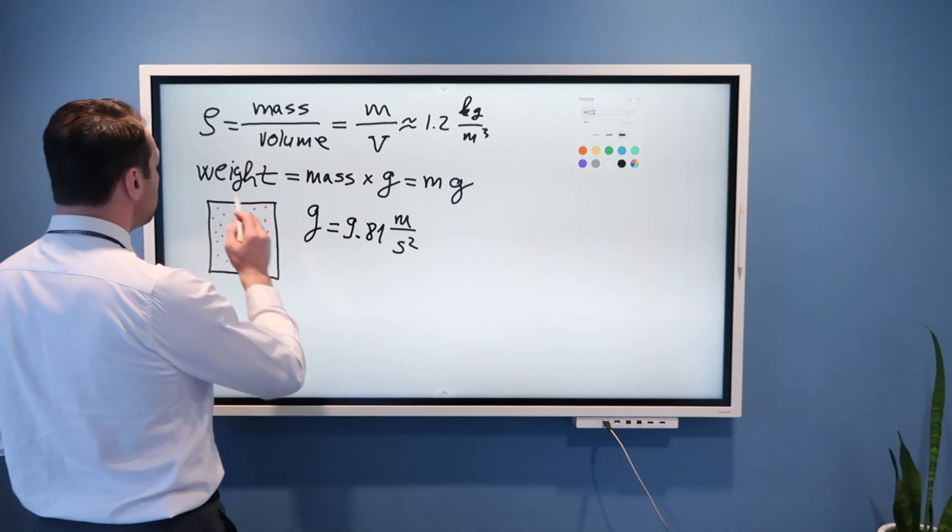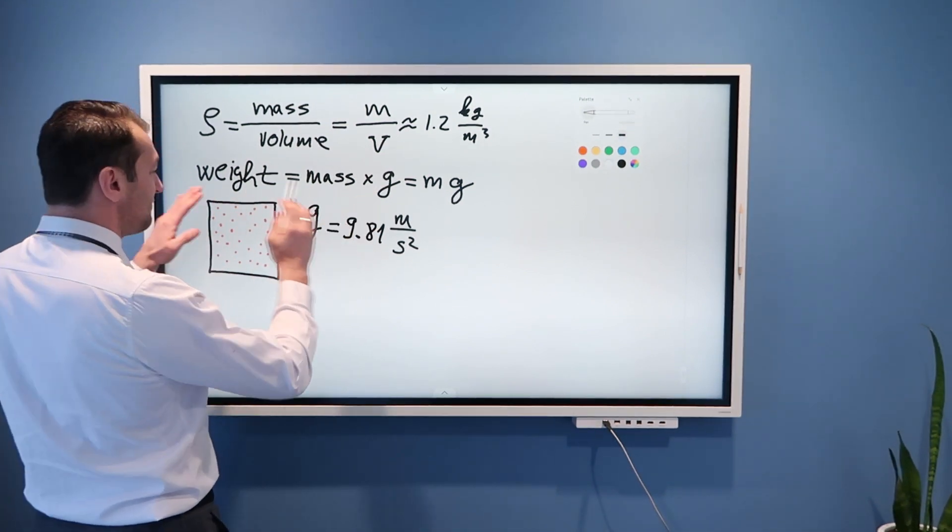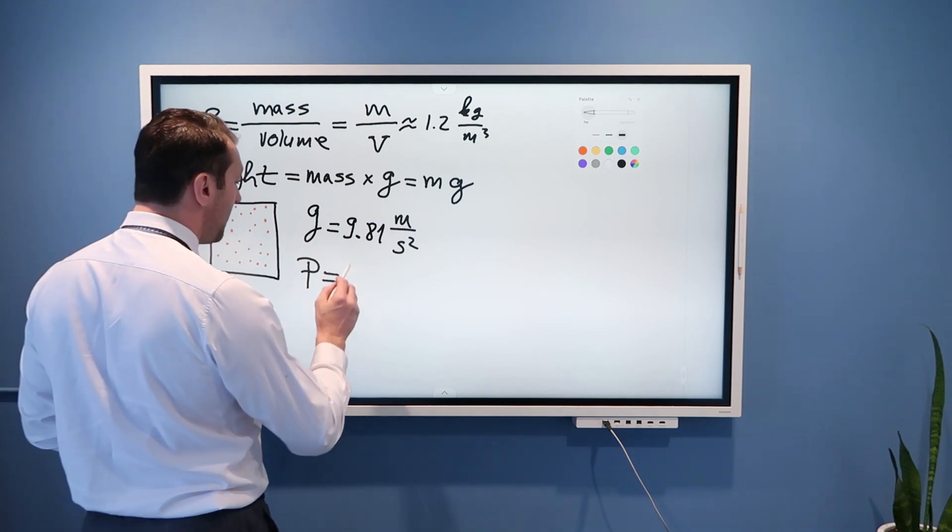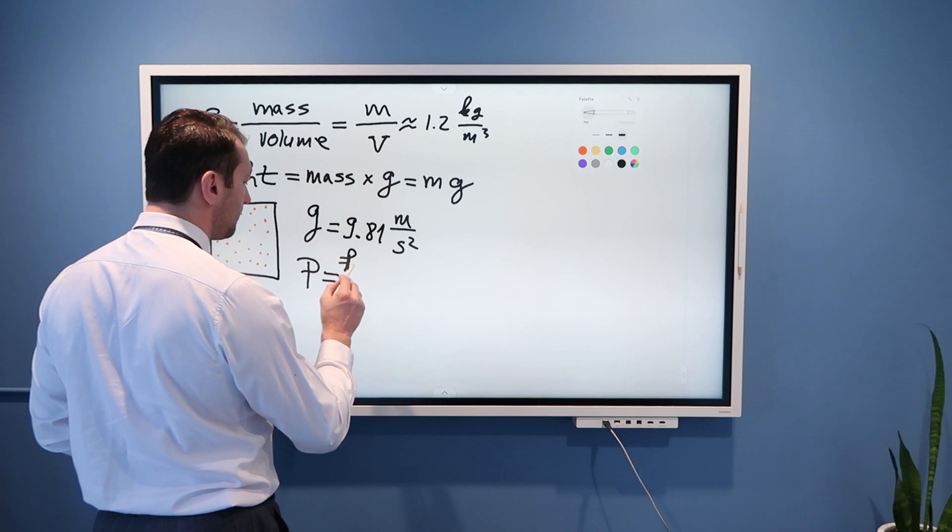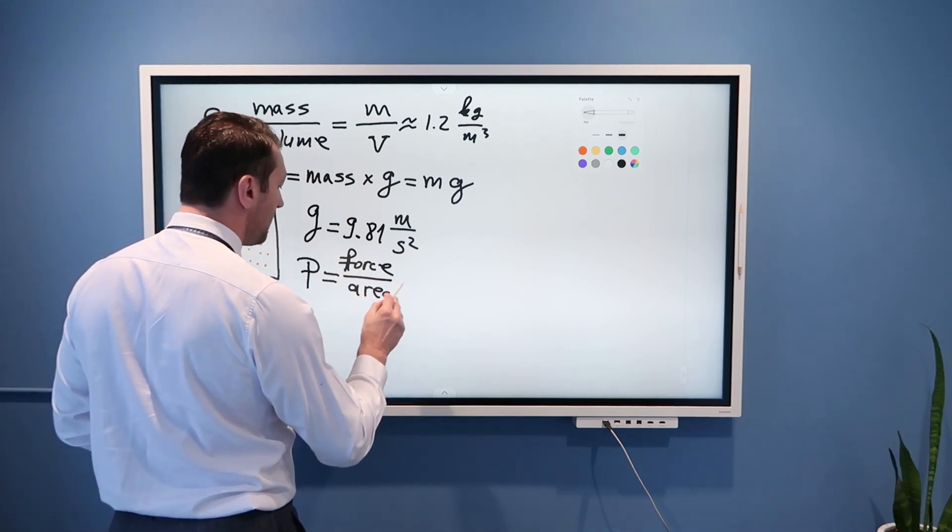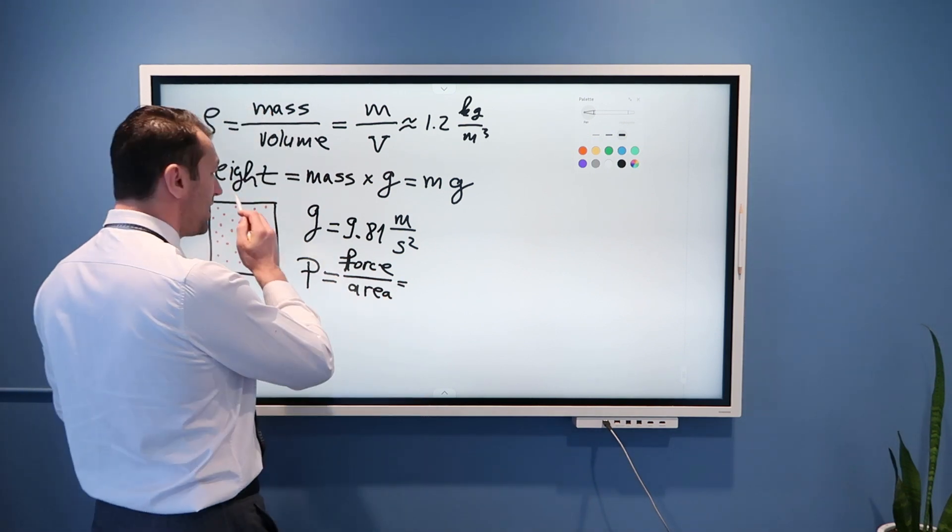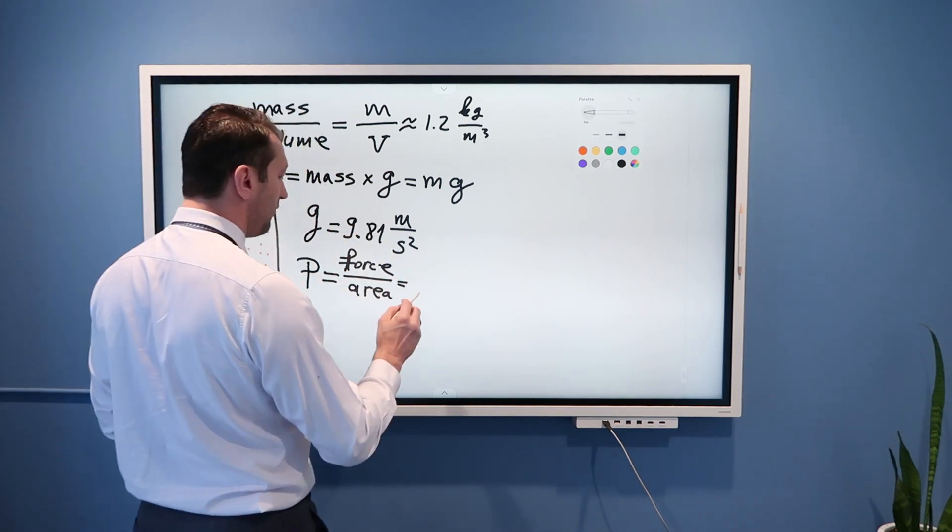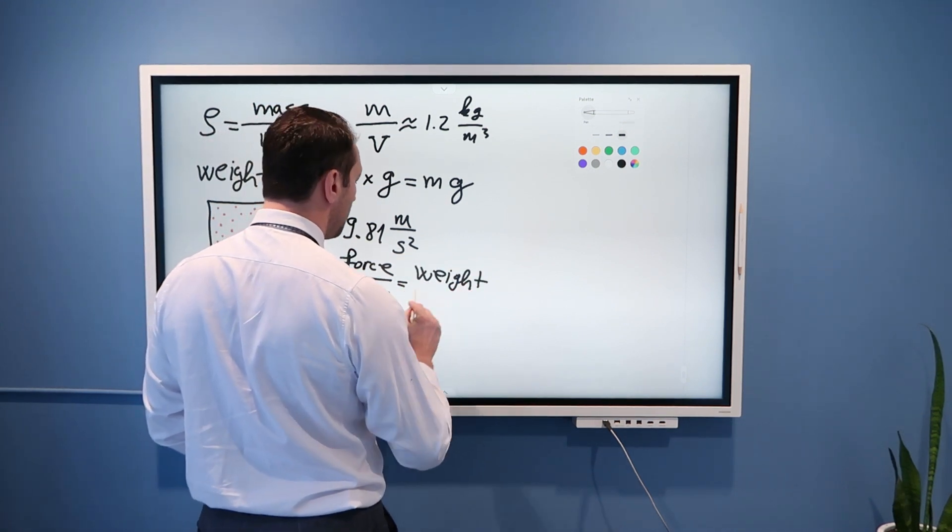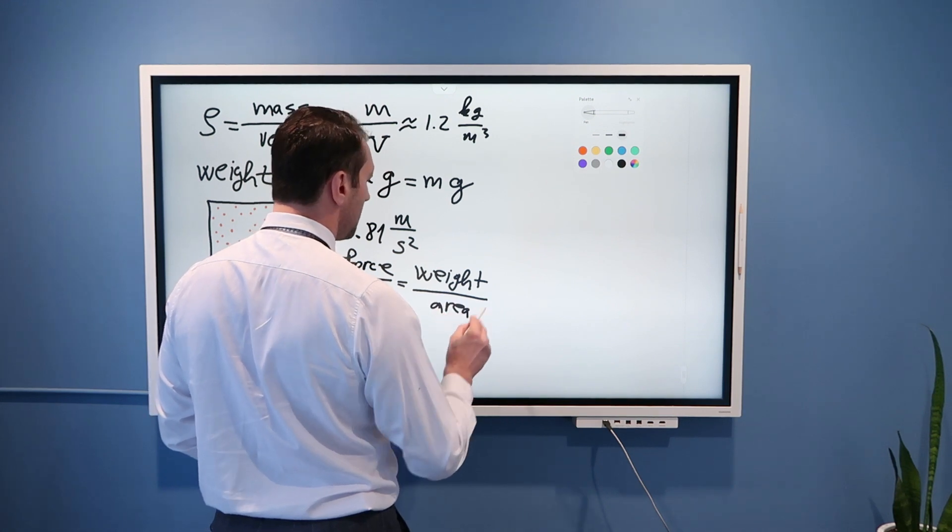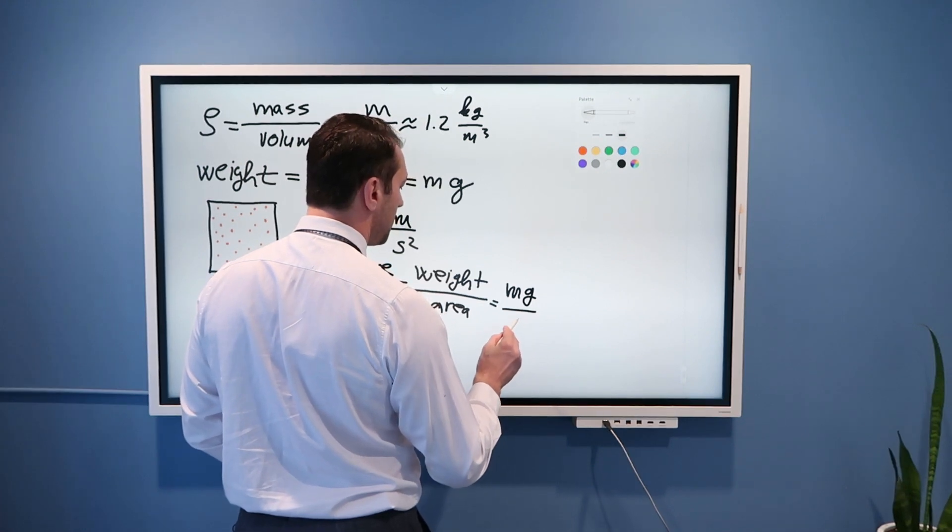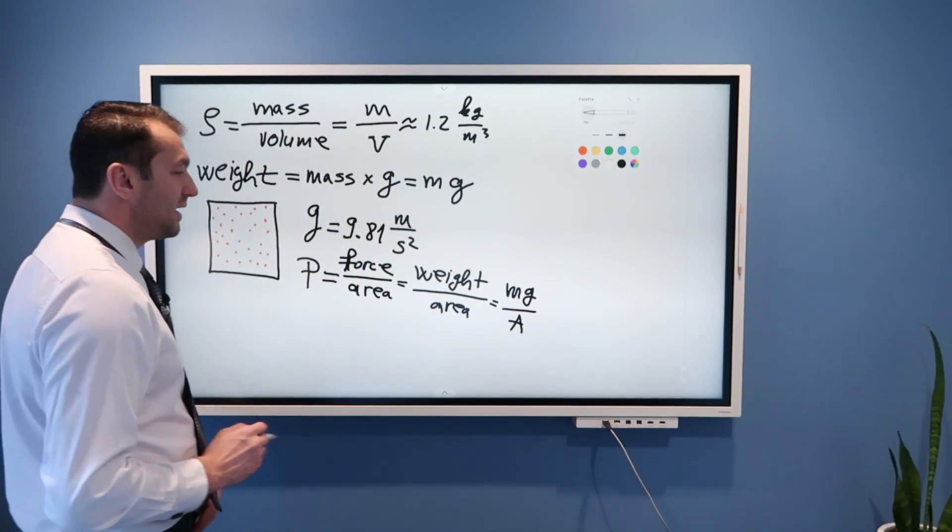And finally let us now relate this weight to the concept of pressure. Pressure is defined as force per area. In terms of atmospheric pressure we are interested in weight of air divided by the area. Or you can see we could define it as mg divided by some area A.